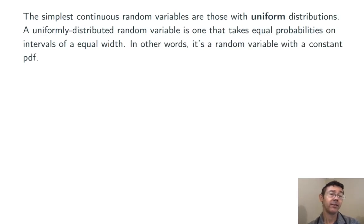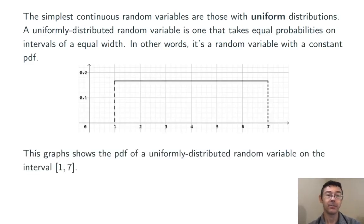To say all of this a little bit differently, a random variable with a uniform distribution is just one that has a constant PDF.